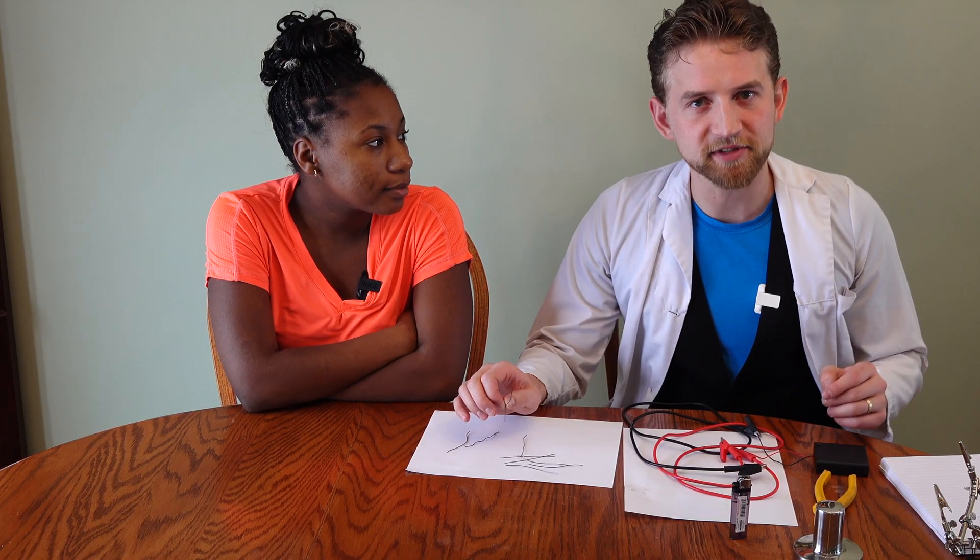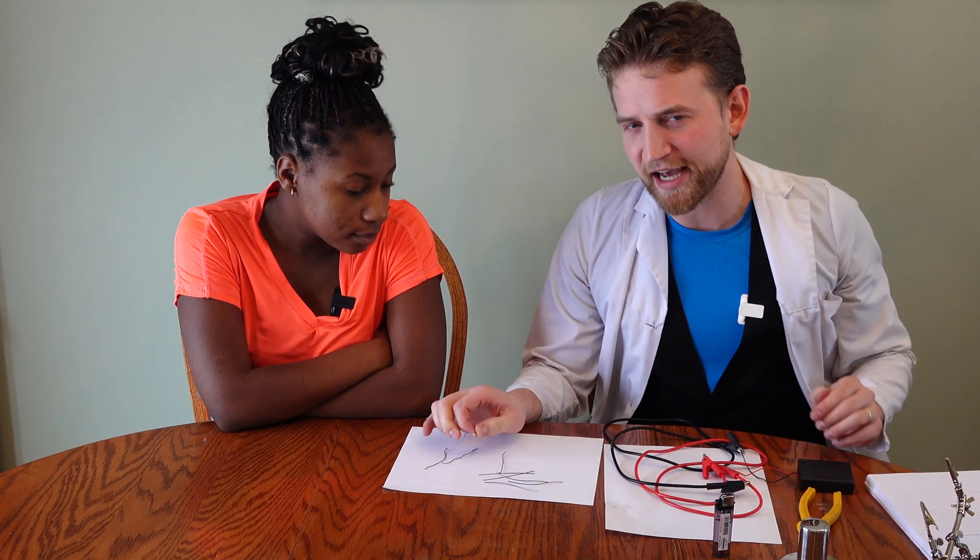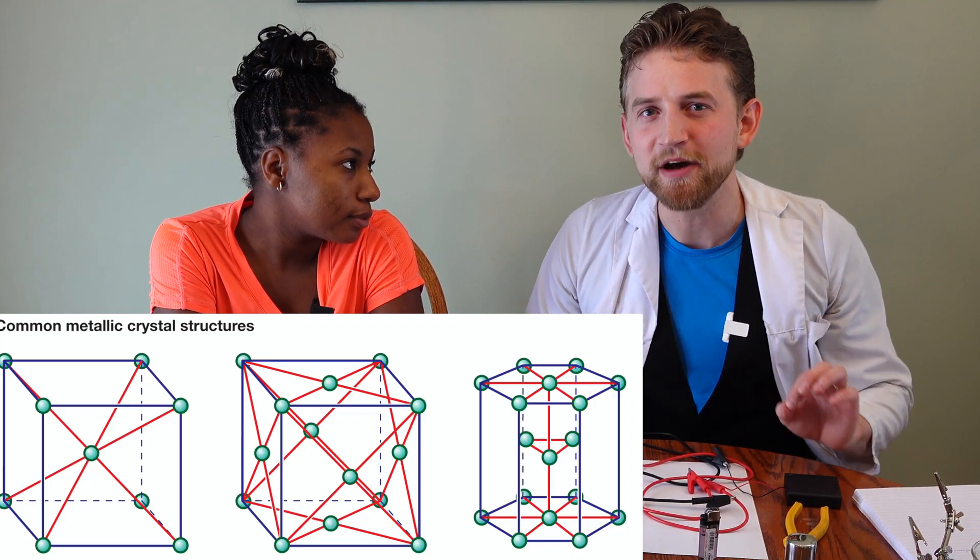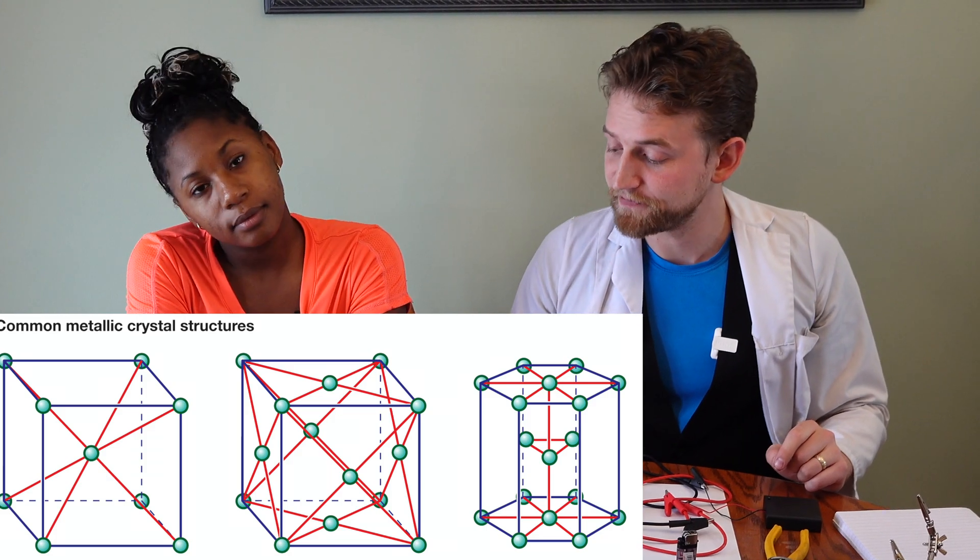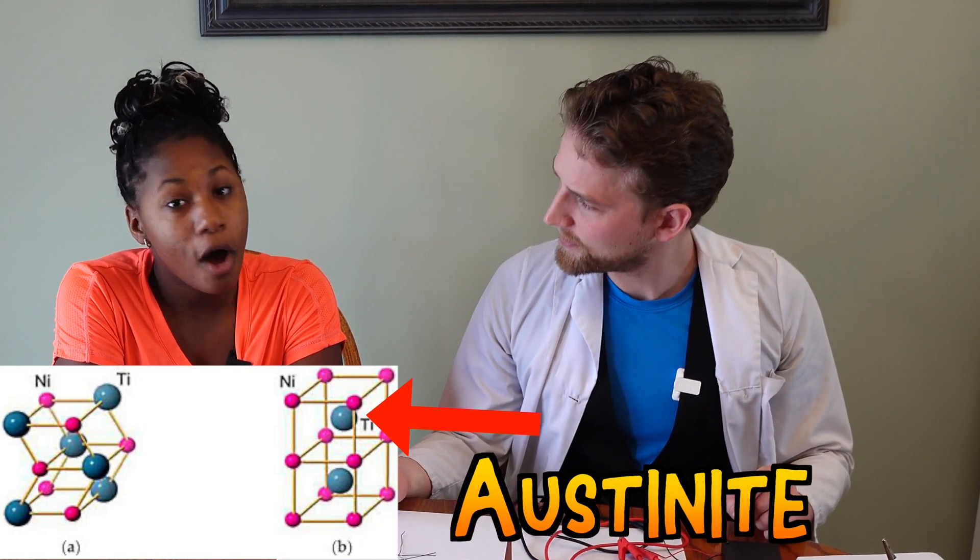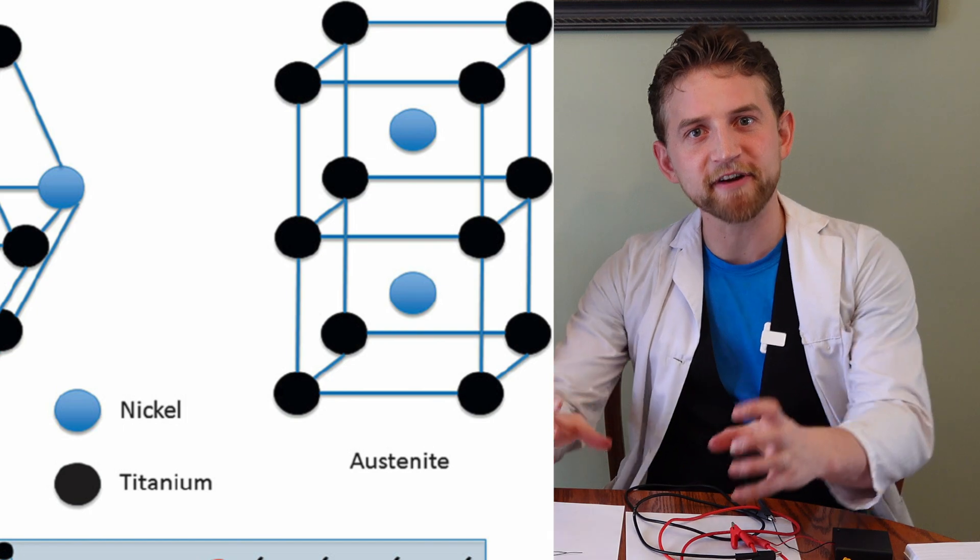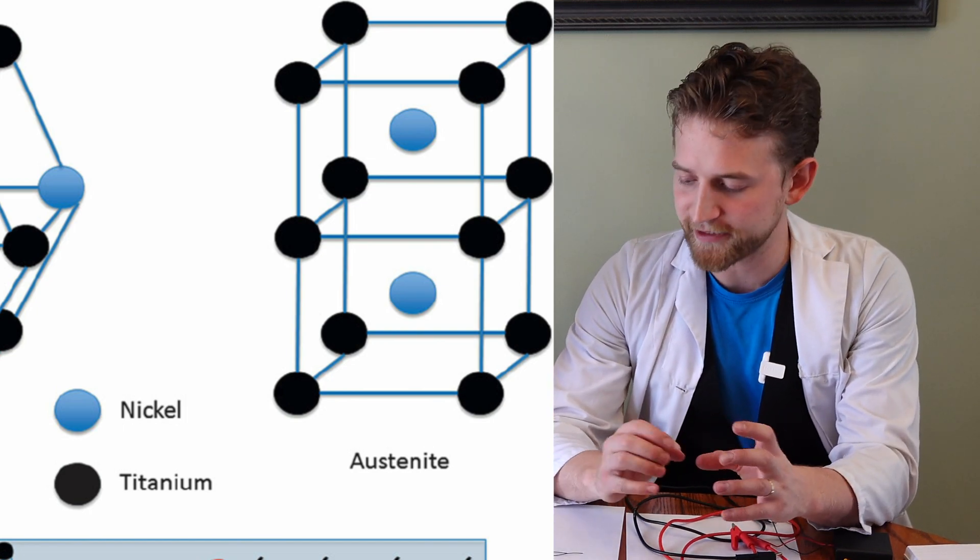Let's define some terms and clarify something. All metals essentially boil down to tiny, nano-microscopic crystalline structures. And nitinol, at high temperatures, takes on an austenite crystal structure, which means that it's very strong cubic bonds.